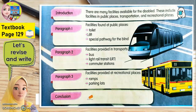For paragraph 1, we have been given: facilities found at public places — toilet, lift, and special pathway for the blind. Untuk perenggan pertama, kamu dah diberikan maklumat sebagai panduan. The first one is toilet — tandas. Lift. Special pathway for the blind — laluan yang istimewa untuk orang buta.